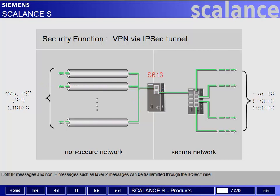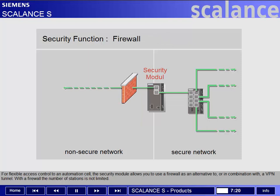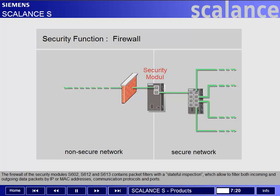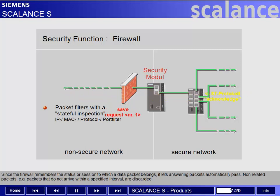For flexible access control to an automation cell, the security module allows you to use a firewall as an alternative to, or in combination with, a VPN tunnel. With a firewall, the number of stations is not limited. The firewall of the security modules S602, S612, and S613 contains packet filters with stateful inspection, which allow filtering both incoming and outgoing data packets by IP or MAC addresses, communication protocols and ports. Since the firewall remembers the status or session to which a data packet belongs, it lets answering packets automatically pass. Non-related packets — for example packets that do not arrive within a specified interval — are discarded.